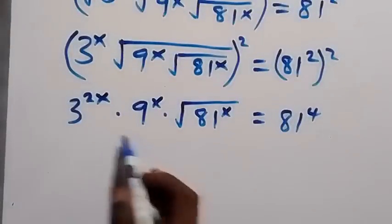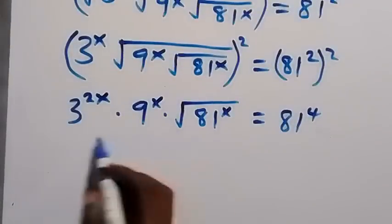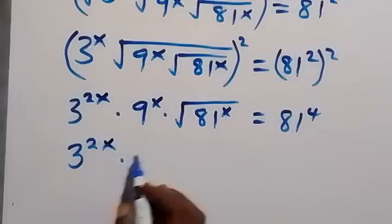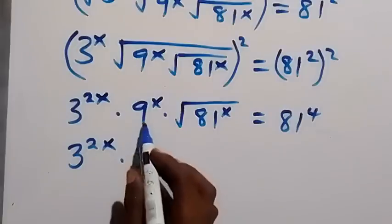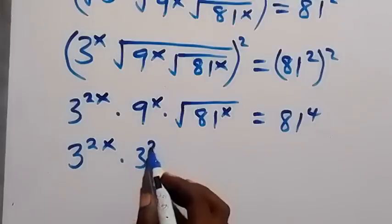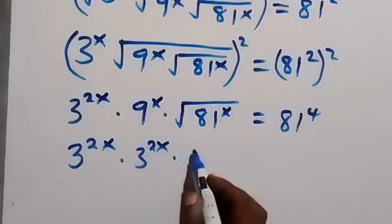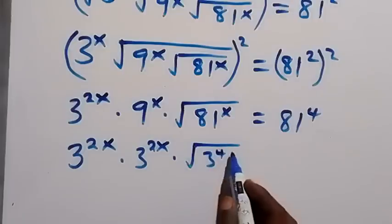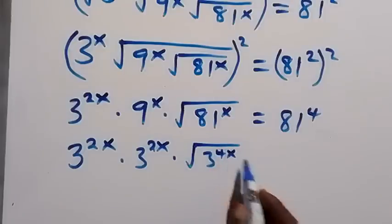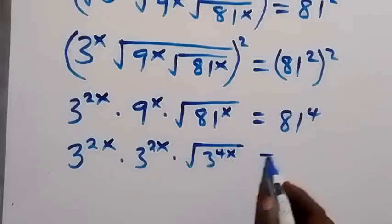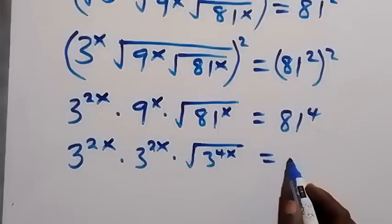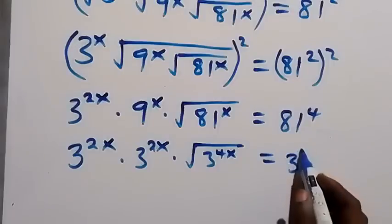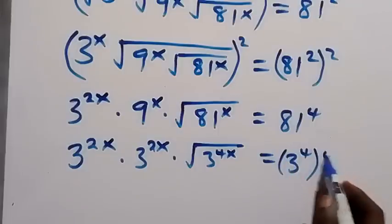In the next step, let's change everything to base 3. We have 3 raised to power 2x, times 3 raised to power 2 also times x — that's 2x — then times square root of 3 raised to power 4 times x, that's 4x. On the right side we have 3 raised to power 4, then raised to power 4.